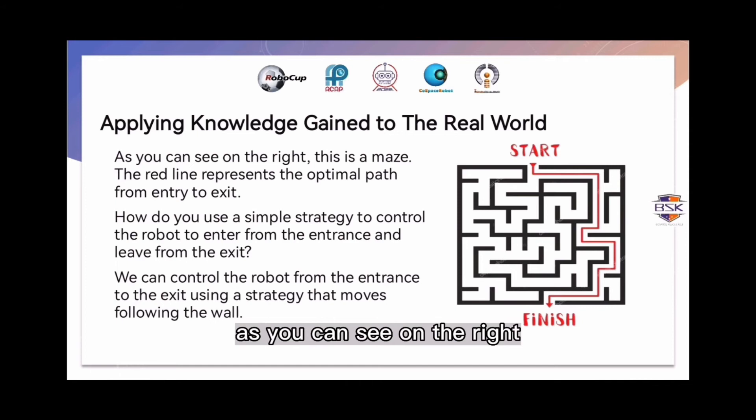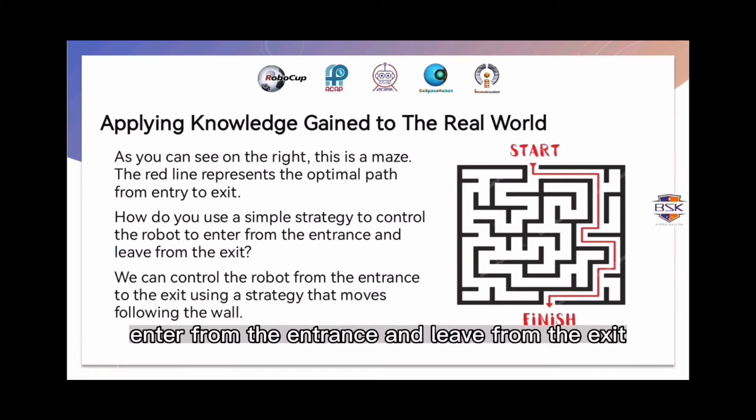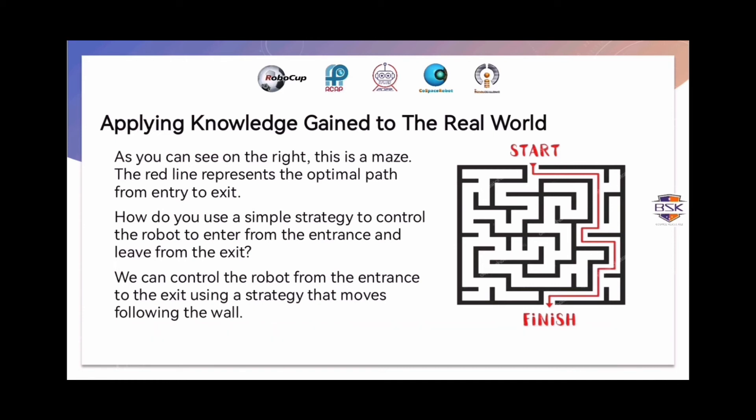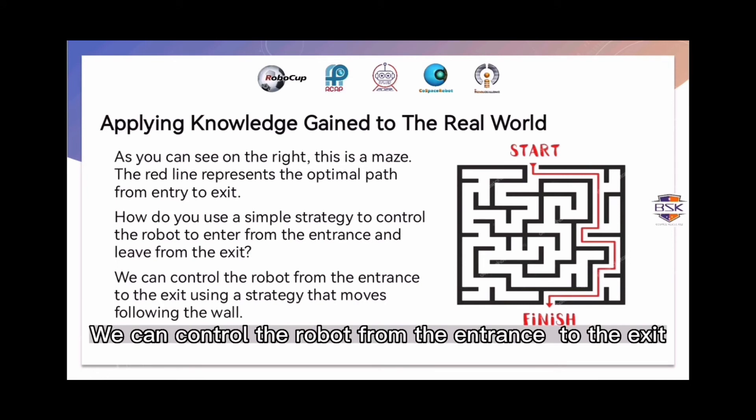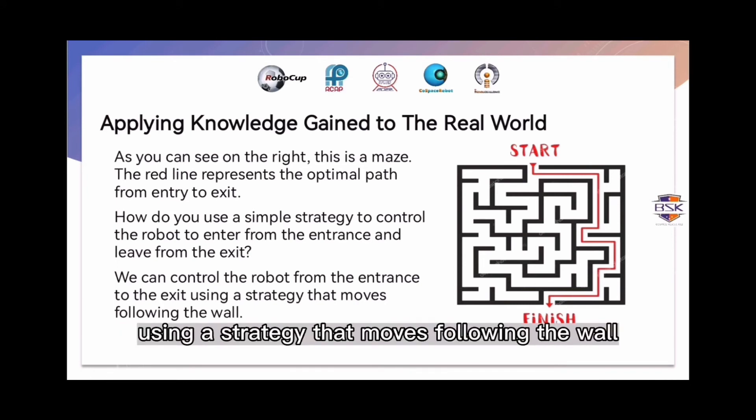As you can see on the right, this is a maze. The red line represents the optimal path from entry to exit, but this optimal path requires a complex algorithm to calculate. How do you use a simple strategy to control the robot to enter from the entrance and leave from the exit? We can control the robot from the entrance to the exit using a strategy that moves following the wall.